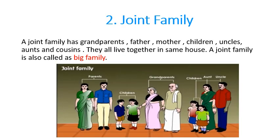Now we will see about joint family. A joint family has grandparents, father, mother, children, uncle, aunts and cousins. They all live together in the same house. So this type of family is called a joint family.